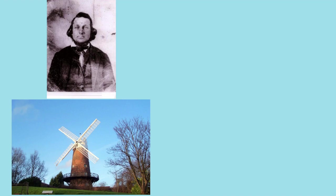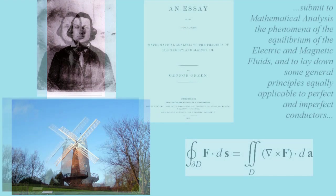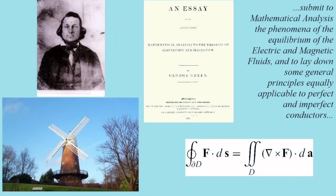In the 1820s, a young man named George Green was working in his father's mill, and despite having almost no formal education, he took up the study of calculus and attempted to apply it to electrostatics. In his 1828 essay, he declared he would submit to mathematical analysis the phenomena of the equilibrium of the electric and magnetic fluids, and lay down some general principles equally applicable to perfect and imperfect conductors. His method was to track down a function he named the potential of the system.